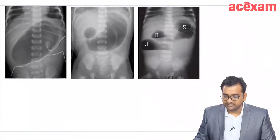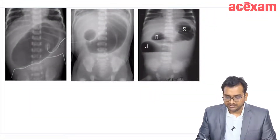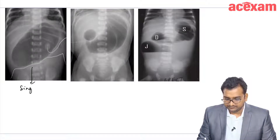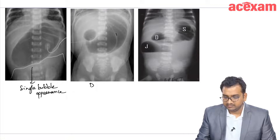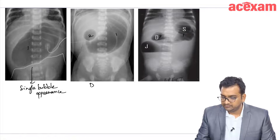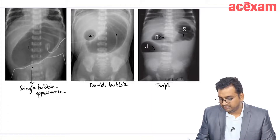Some important x-rays which can be given in the exams. This is basically a single bubble appearance. This is one bubble, two bubbles — this is a double bubble appearance. This is one, two, and three — this is a triple bubble appearance.